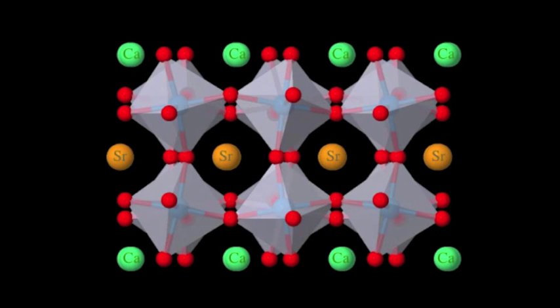The different colored spheres in this three-dimensional rendering of the material correspond to the different chemical elements in the structure: strontium, calcium, ruthenium, and oxygen.